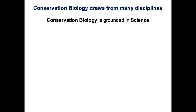We talked about why we need conservation biology — population growth and ecological footprint. Now I want to spend a little bit more time talking about what conservation biology is. It's really multidisciplinary, but it is grounded in science, which is why it's a biology and environmental science class.